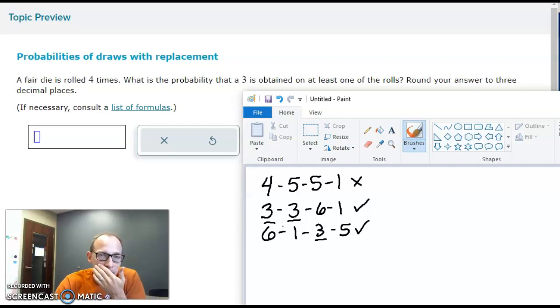So here, if we could find the probability of not getting any threes, that would be the opposite of this situation, and we could just subtract that from one to get our answer.